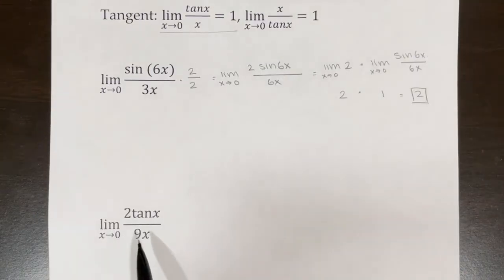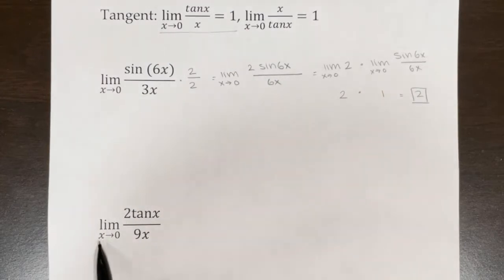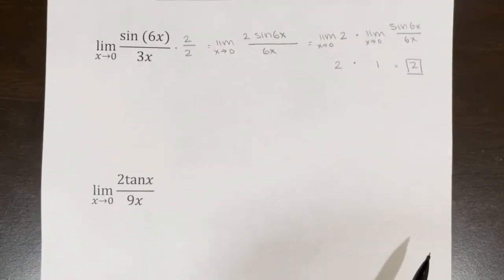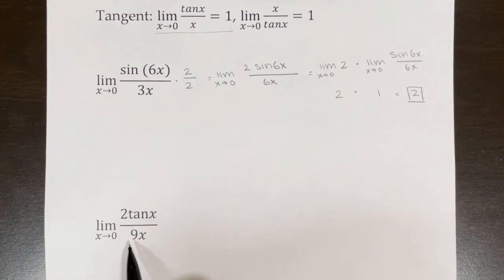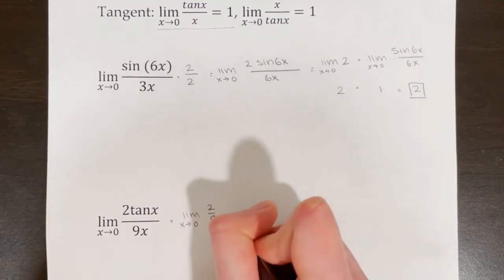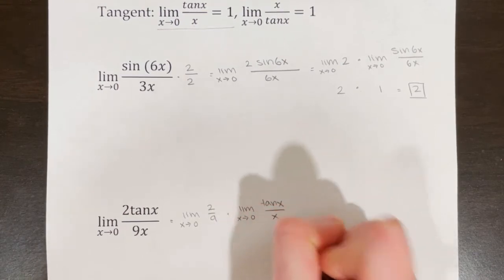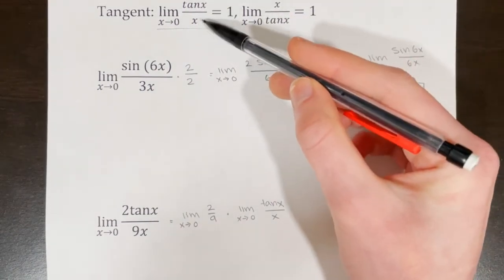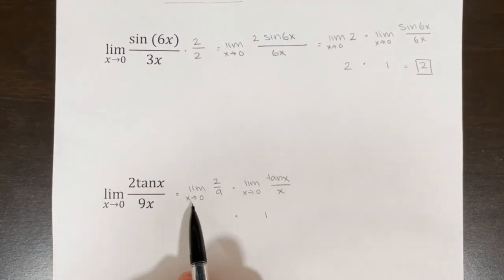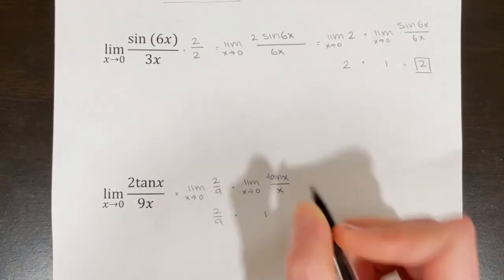In the second example, we want to get tan of a number over that same number so it simplifies to 1. These identities only work when x is approaching 0, which it is here. We split it into the limit as x goes to 0 of 2 ninths, times the limit as x goes to 0 of tan x over x. Since tan x over x as x goes to 0 equals 1, and the limit of 2 ninths is 2 ninths, the answer is 2 ninths times 1, which is 2 ninths.